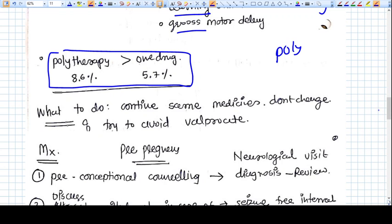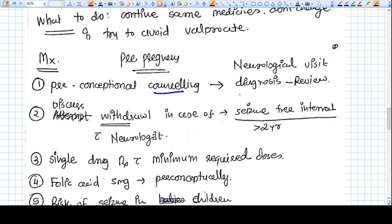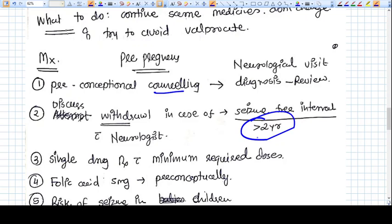What is the management of epilepsy in pregnancy? Pre-pregnancy. The preconceptional counseling is very important. When the patient is on seizure disorder, is on some AEDs, then you should refer them to a neurologist to review the diagnosis, confirm the diagnosis, and adjust the doses of AED. If the seizure-free interval is more than 2 years, then discuss withdrawal with the neurologist. If the neurologist finds that it's okay to discontinue the AED, then you can go for it.